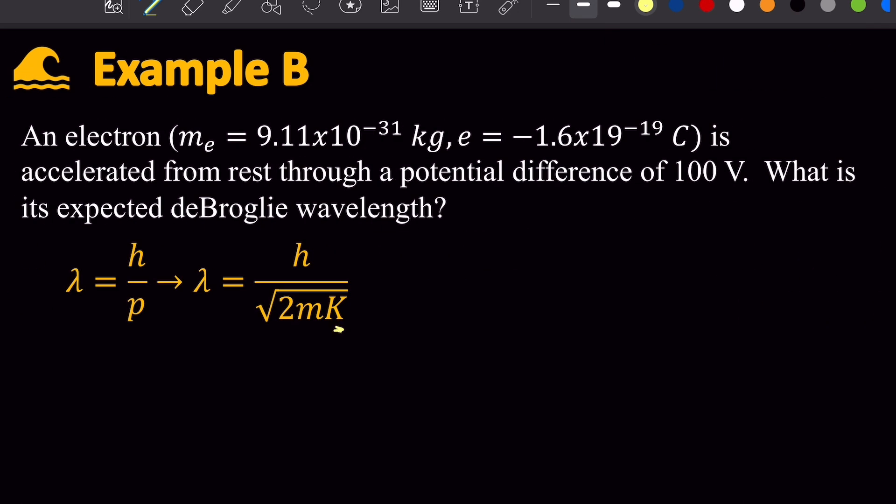Now I don't know the kinetic energy, but I do know the work energy theorem, which says that the work done on the electron is equal to its change in kinetic energy. Now since its initial kinetic energy is zero, the work is just going to be equal to this final kinetic energy here.